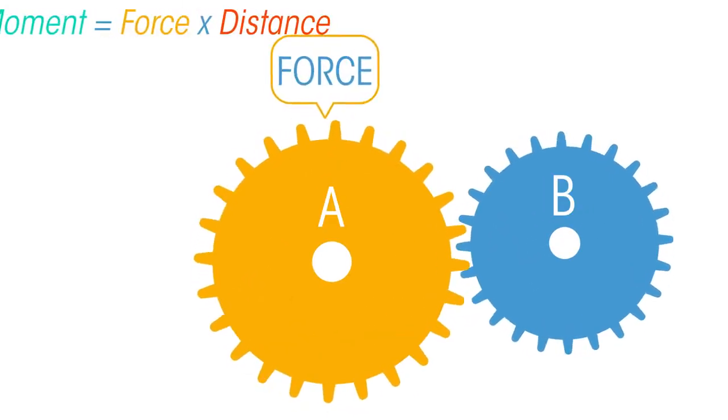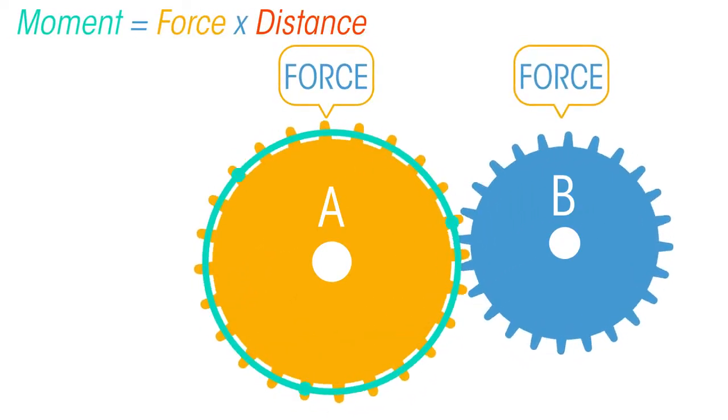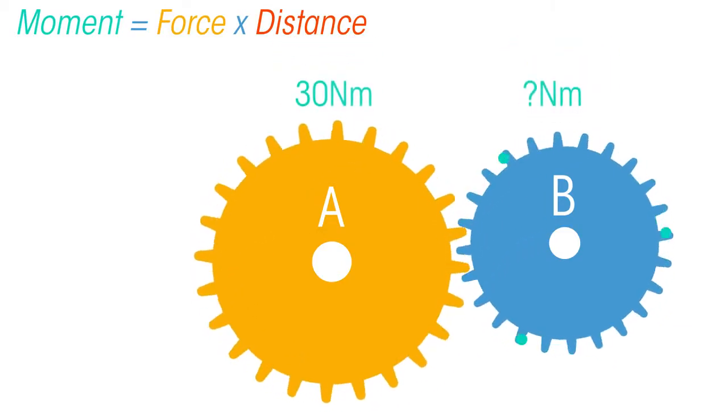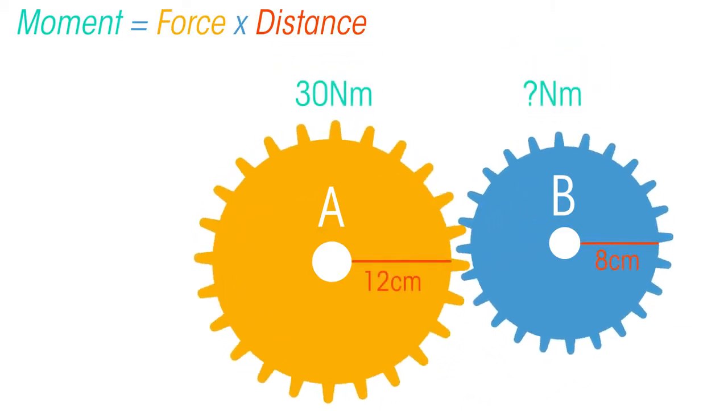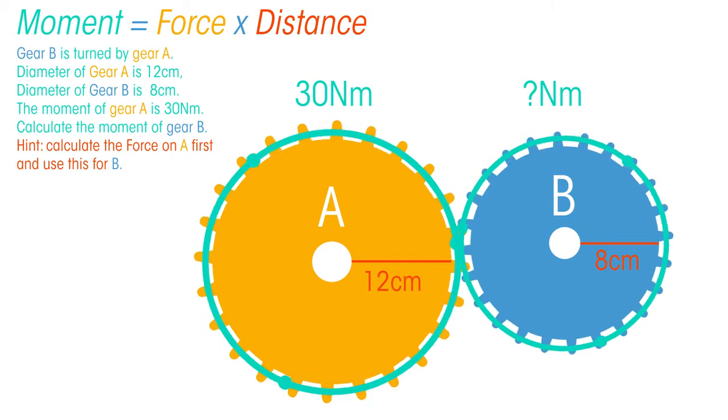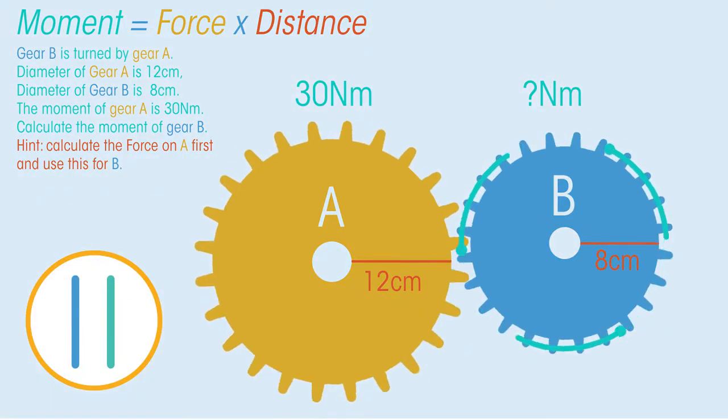Let's look at an example. The force that is exerted on gear A will be the same as the force that also acts on gear B. But the moments will be different. So start by working out the force that's being exerted on gear A, and then use this force for B to calculate the moments acting on B. Pause the video and give it a go.